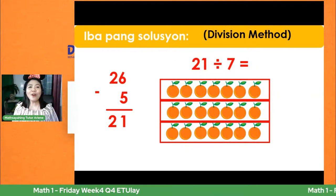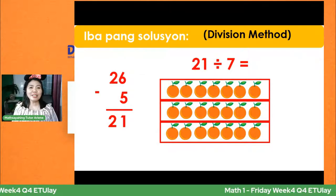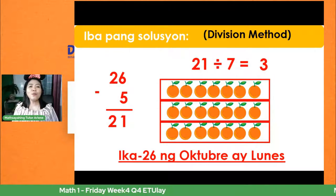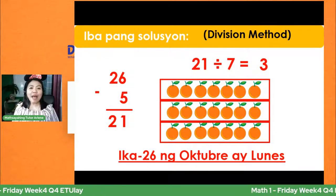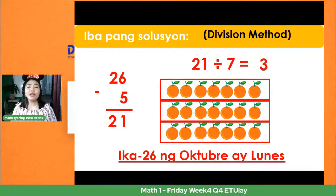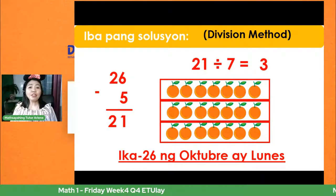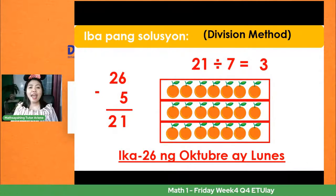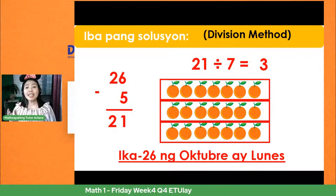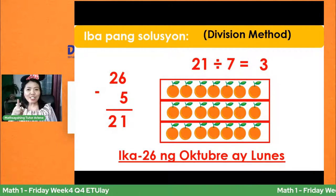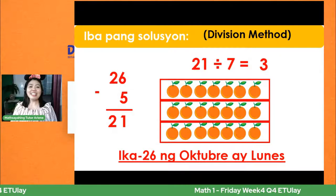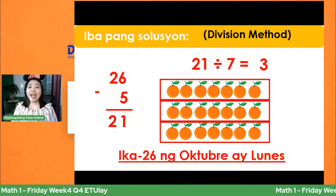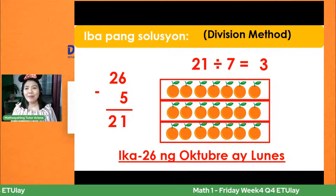Mayroon tayong 3 na grupo ng 7 sa 21. Ibig sabihin, ang sagot natin ay 3. Nakita natin na walang natira o remainder kapag ang 21 ay hinati sa 7. Ang ikadalawampu't 6 ng Oktubre ay papatak sa Lunes — pareho sila ng araw kung kailan nagsimula. Sa makatawid, ang araw ng ika-26 ng Oktubre ay Lunes.